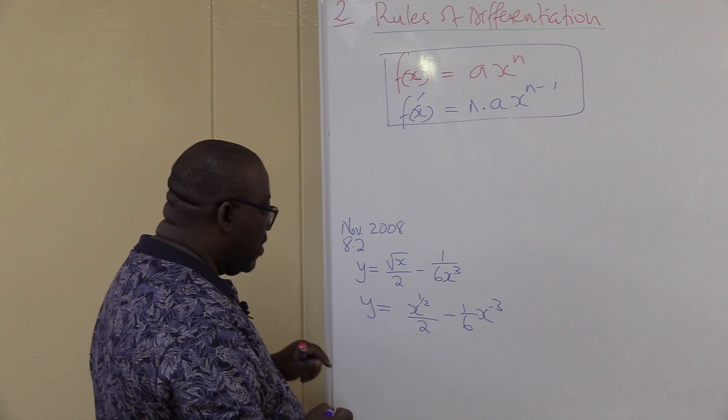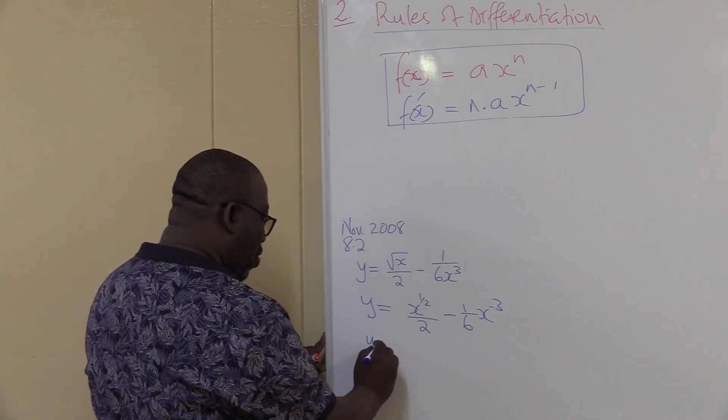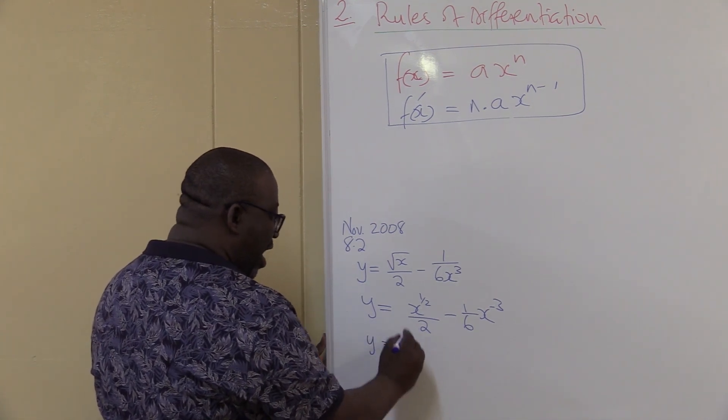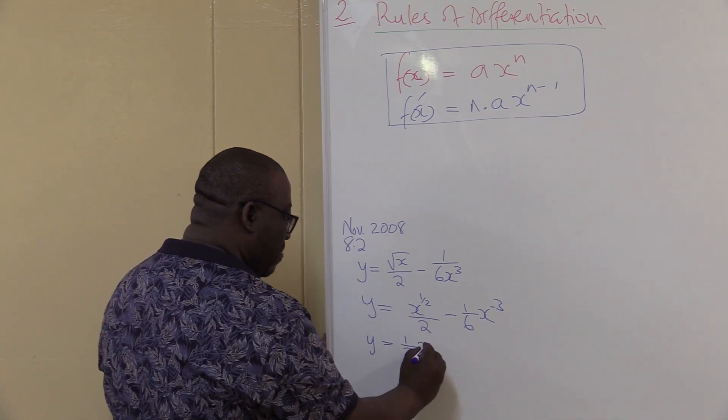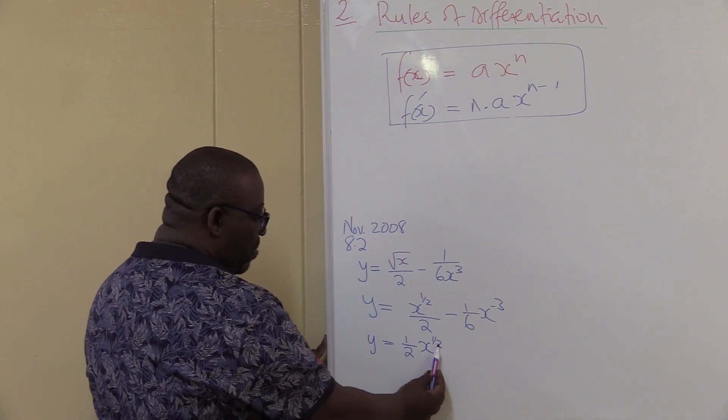Let me deal with this one because it is still not in that form. So my y will then be equals to, I've got 1 there over this 2, I've got my exponent, my coefficient of x now, x to the power 1 over 2. It is now in the form of ax to the power n.